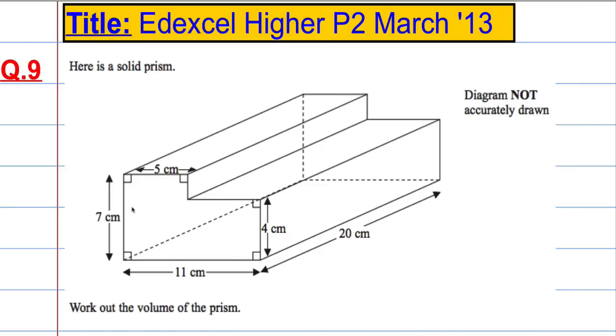In question 9 we're given a solid prism, as usual not drawn accurately, and we're asked to work out the volume. If you look at the front of your paper, the formula for the volume of a prism is given: it's the area of the cross-section multiplied by its length.